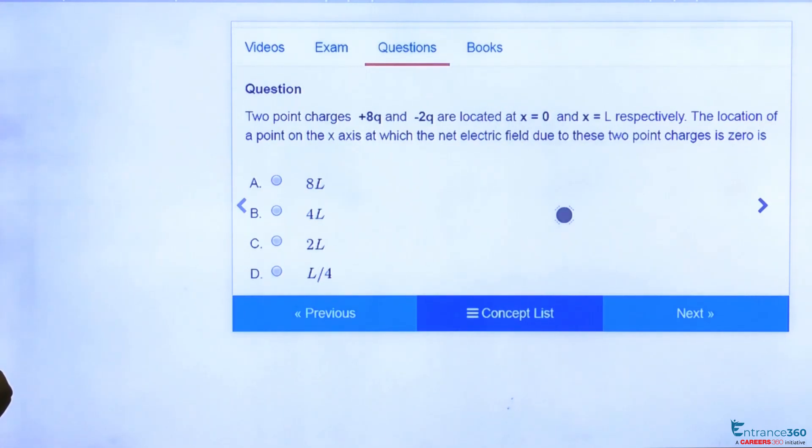It is given as 8q and minus 2q located at distance 0 and L. The location of a point on the x-axis where the net electric field due to these point charges is zero, so we can use the superposition principle.